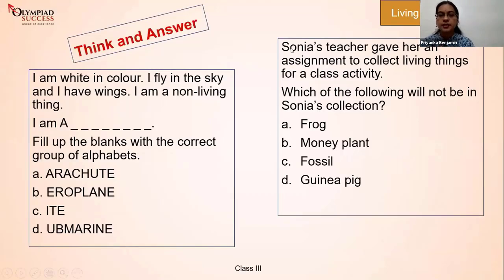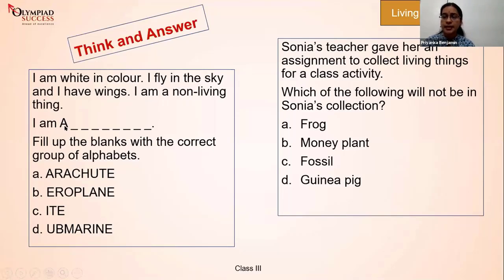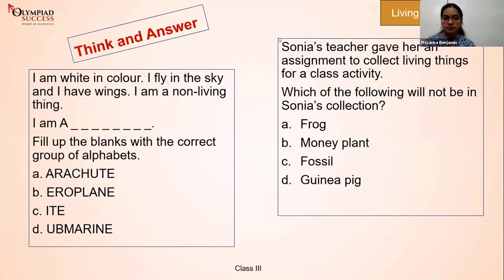I'd encourage you all to try to solve these two questions — write your answers in the chat section. The riddle: 'I am white in color, I fly in the sky, I have wings, and I am a non-living thing. What am I?' The first letter is already given — it starts with K. A lot of you are thinking and noting down the answer.